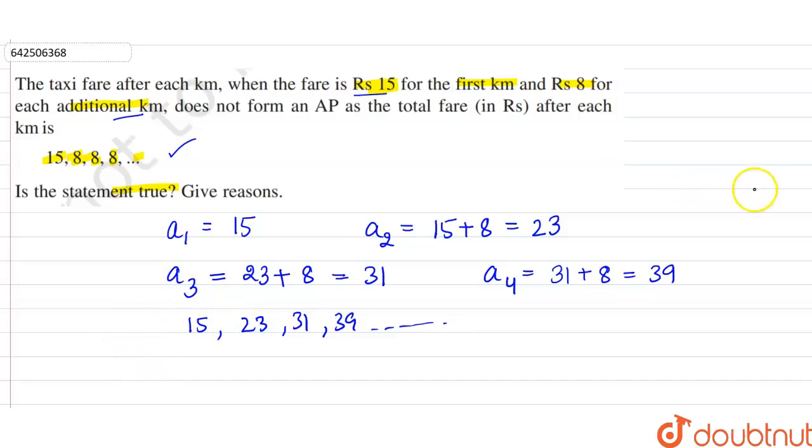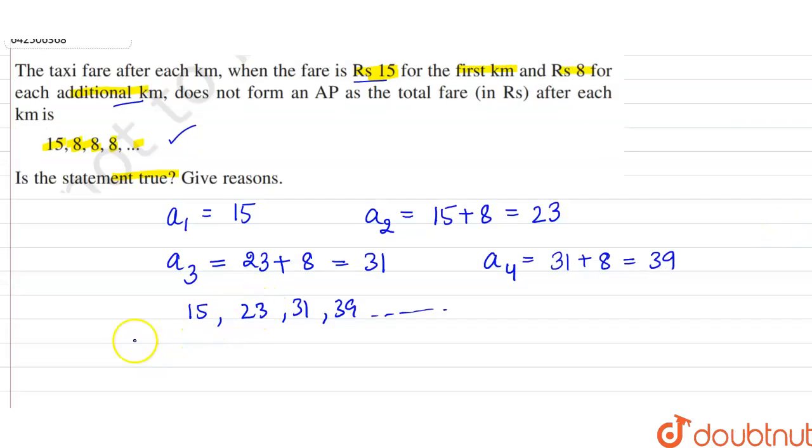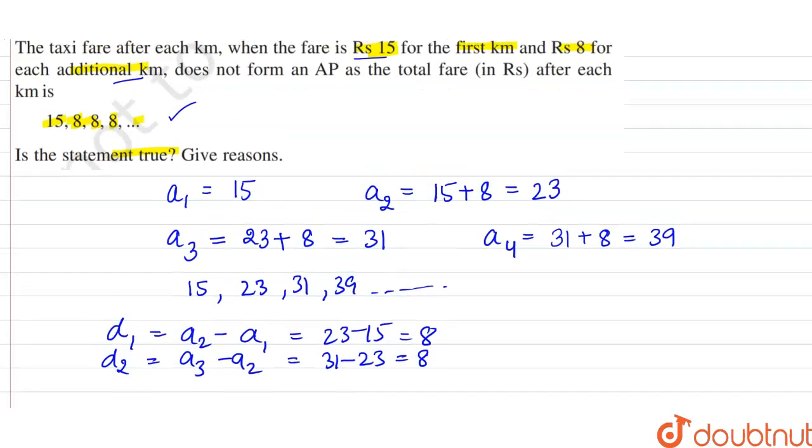Now let's check the common difference of this series. So the common difference d₁ = a₂ - a₁ = 23 - 15 = 8. Now the common difference d₂ = a₃ - a₂ = 31 - 23, which is again equal to 8, and so on.